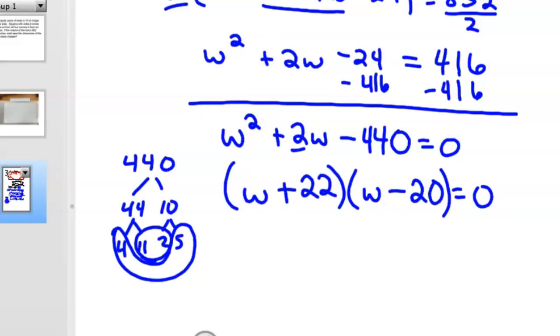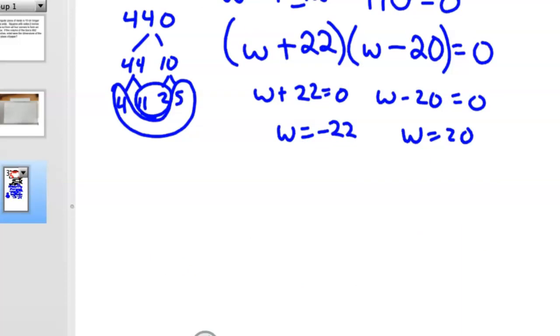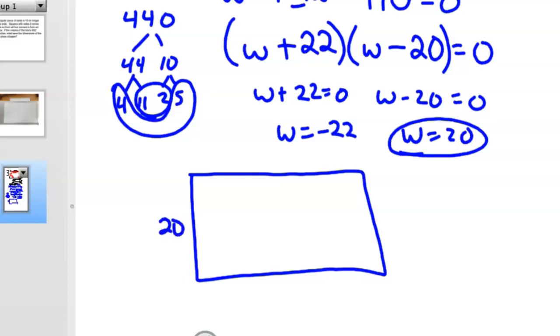You could also use quadratic formula, which I'll show at the end of this thing, but setting these both to 0 then, and we know W is 20, or W is negative 22. Well, it's probably not going to be the negative one, because we don't have negative distances. So our width is 20. So our width is 20, so now we go back to our rectangular box, and this was 20. That means this was W plus 10, so the original length was 30.